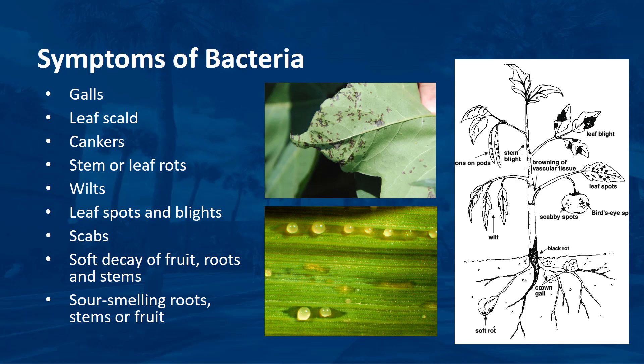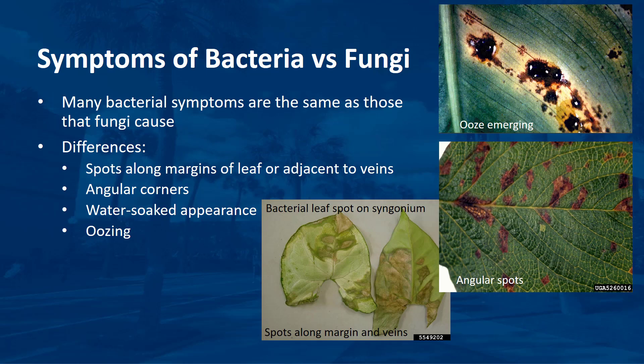Bacterial diseases often produce water soaking around the area where the bacteria enter the leaf. Later, the lower surface of the leaf has a dark and greasy appearance. You most often see the greasy appearance in leaf infections. These are common symptoms of a bacterial disease. But you also need to look for signs of the pathogen, such as bacterial ooze as it transpires from a lesion—you can see ooze most often in the morning. Some bacterial diseases have strong odors. Other symptoms include galls, cankers, wilts, and soft decay. Many of these symptoms are the same as those that fungi cause, which can make identifying a disease challenging unless you send a plant sample to a diagnostic lab.